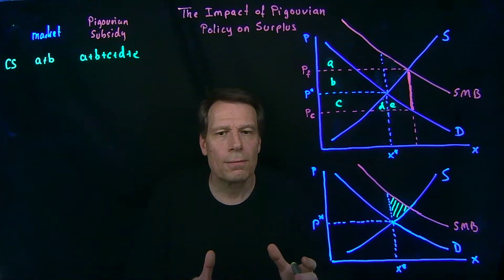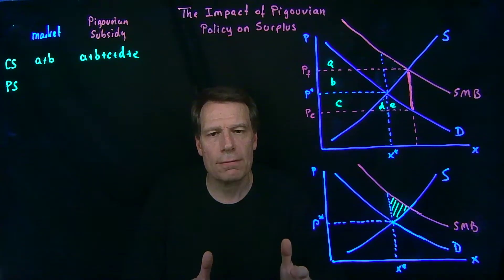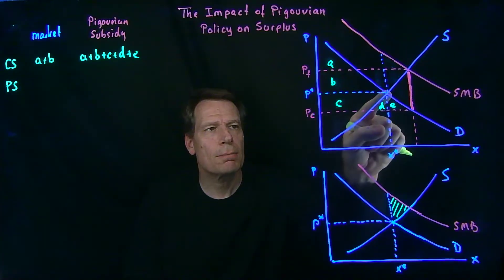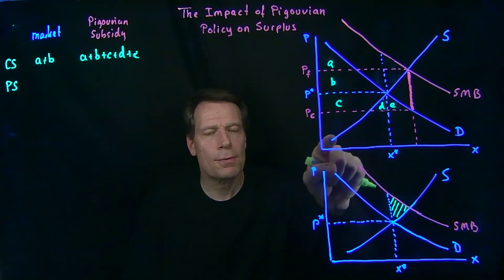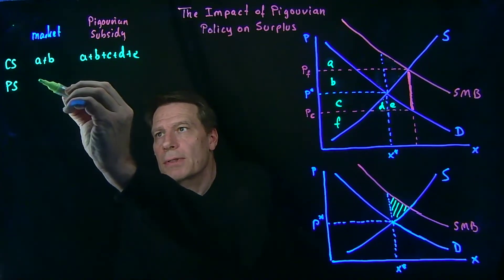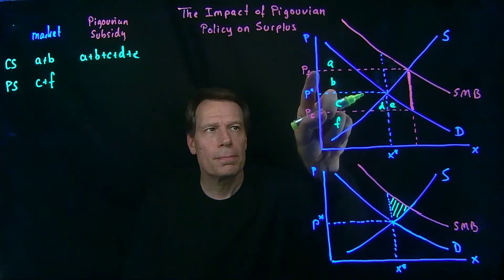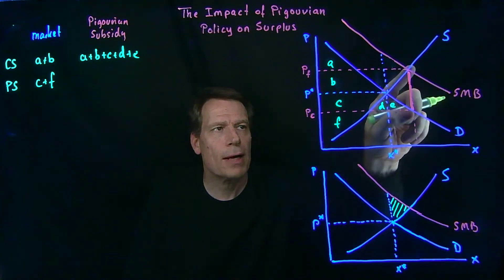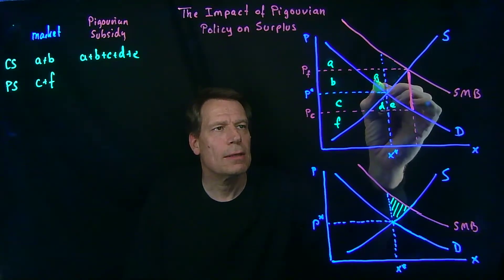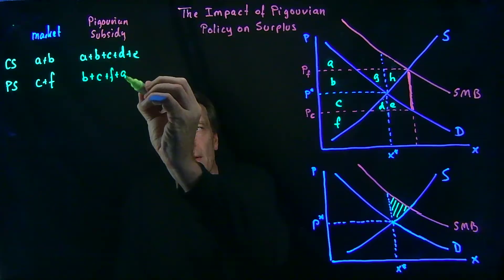Then we can think about firms and their producer surplus — everything below the price that producers receive down to the supply curve. Under the market, firms receive the market price and produce the market quantity; their surplus includes areas C and F. Under the subsidy, the price that firms collect goes up and firms produce more. Their surplus is everything below that price down to the supply curve: areas B, C, F, G, and H.